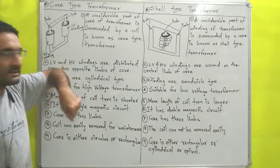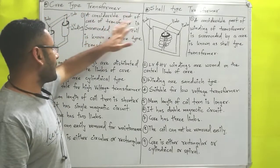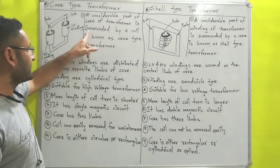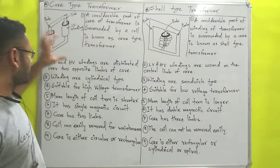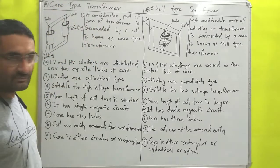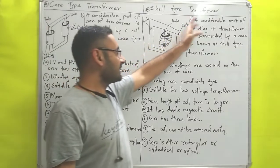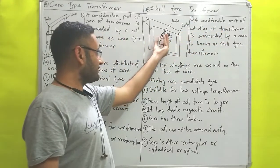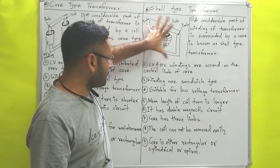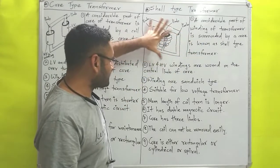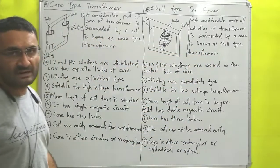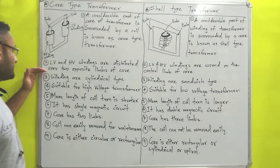Now we will discuss the definitions. The definition of core type transformer is: a considerable part of the core of the transformer is surrounded by a coil — that is known as a core type transformer. Similarly, in the shell type transformer, a considerable part of the winding of the transformer is surrounded by the shell or core — that is why it is known as a shell type transformer.